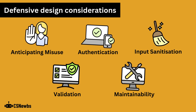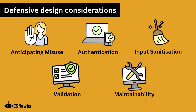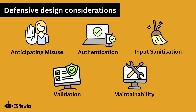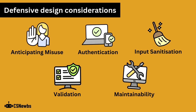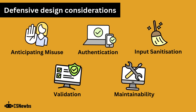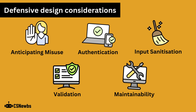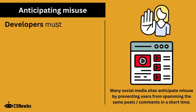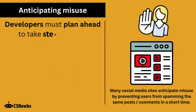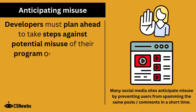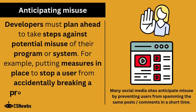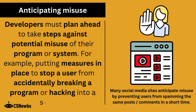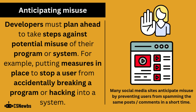To ensure that a program is secure and robust, meaning it is able to handle all likely input values, programmers use these techniques, known collectively as defensive design. Developers must plan ahead to take steps against potential misuse of their program or system, for example putting measures in place to stop a user from accidentally breaking a program or hacking into a system.